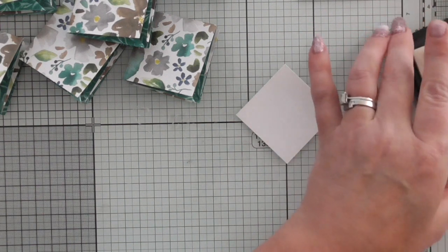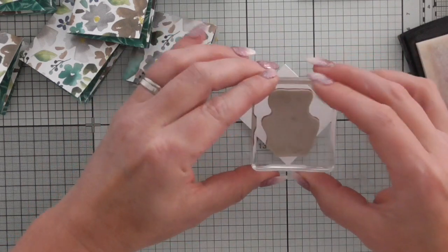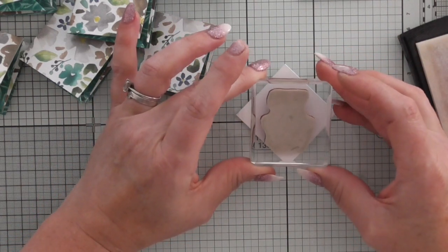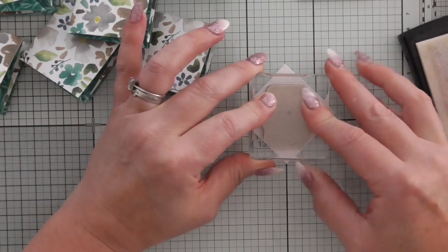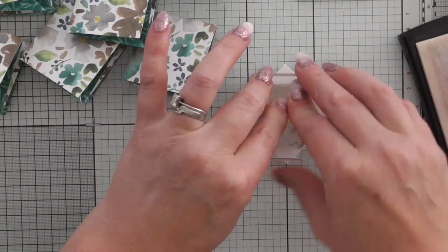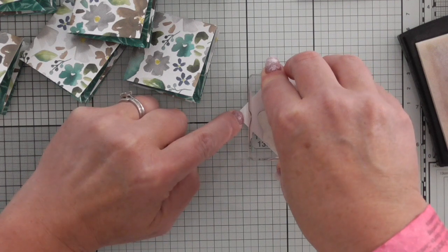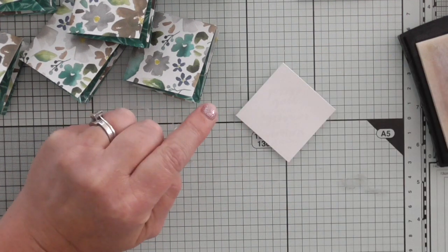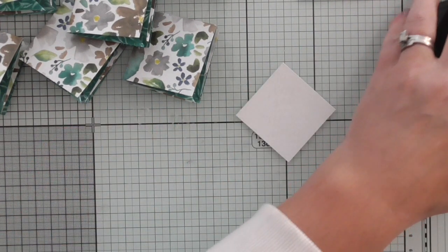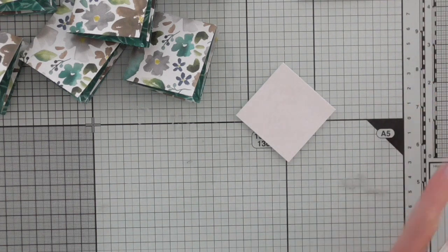And then we're going to stamp it while it's on a point. So I'm going to line it up on my grid so that I know that the points are straight. And I've mounted my stamp here and I'm using Versamark. So ink that up really well. I've not used this stamp before so hopefully it'll just stamp nicely. It does just fit nicely in that square because I checked.